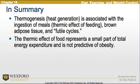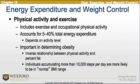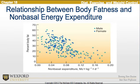For energy expenditure, physical activity and exercise includes exercise and occupational physical activity. It accounts for 5% to 40% of total energy expenditure depending on an individual's activity level, and is important for determining obesity. There is an inverse relationship between physical activity and percent fat. Individuals accumulating more than 10,000 steps per day are more likely to be in the normal BMI range. This chart shows the relationship between body fatness and non-basal energy expenditure.